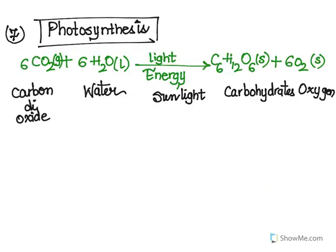For point number seven, we take a look at the equation for photosynthesis, where carbon dioxide and water combine in the presence of light energy to produce carbohydrates and oxygen. This is an example of how energy is being used when photosynthesis occurs in nature.